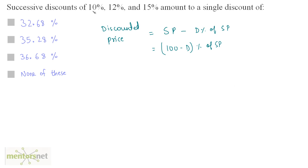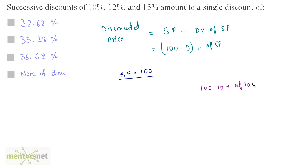We have successive discounts of 10%, 12%, and 15%. Let us assume that the selling price is equal to 100 rupees. We first have a discount of 10%, which means the discounted price will be (100 minus 10)% of the selling price — that is, 90% of 100.